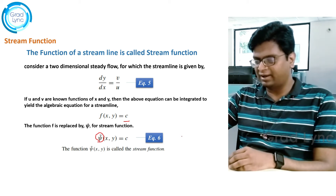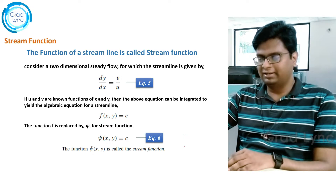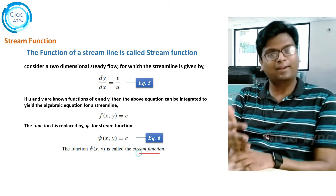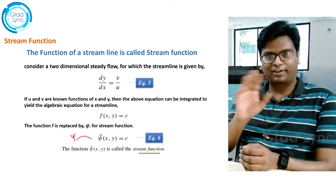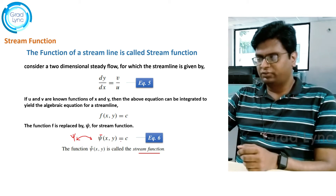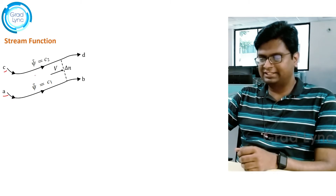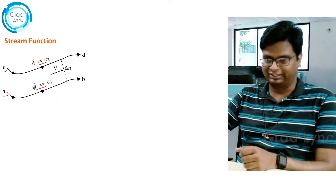So, psi(x, y) = c — let's call this equation number 6. For the time being I will write it as psi-bar and we will try to understand what psi-bar is. Both psi and psi-bar are stream functions; later in this lecture we will understand the difference between them. To understand the stream function better, let's define two streamlines: ab given by psi-bar = c1, and cd given by psi-bar = c2. These are the equations of the two streamlines.